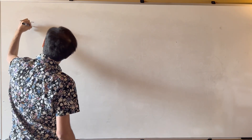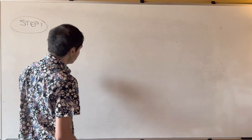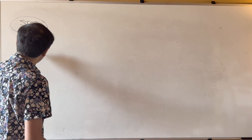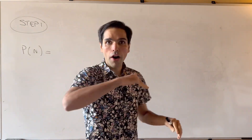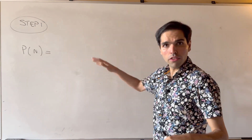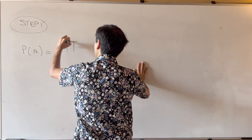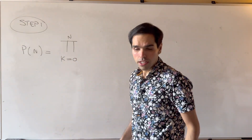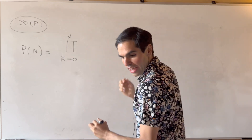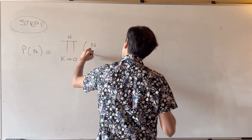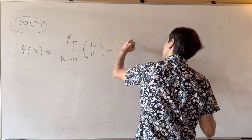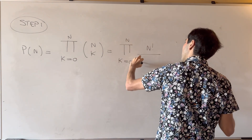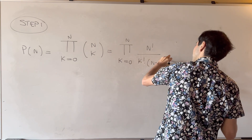Step one: let's find a nice formula for P(n). P(n) is the product of all the numbers in row n — the product from k=0 to n of n-choose-k, which is the product from k=0 to n of n! over k! times (n−k)!.